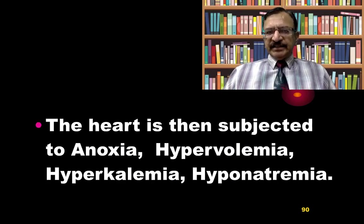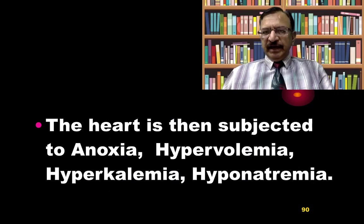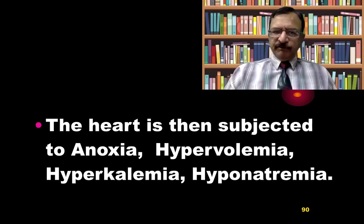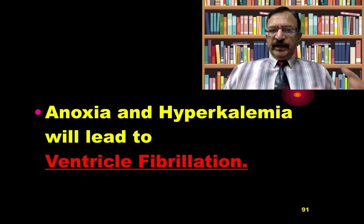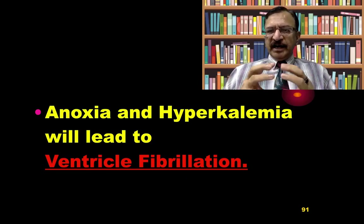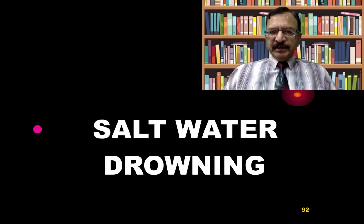The heart is then subjected to anoxia on one side, and hypervolemia and hyperkalemia on the other, along with reducing sodium — hyponatremia. This electrolyte imbalance, hypervolemia, and anoxia subject the heart to extremely negative effects. Anoxia and hyperkalemia lead to ventricular fibrillation; the heart loses its power to pump, and death occurs in about four to five minutes.